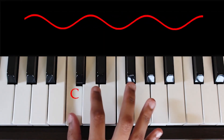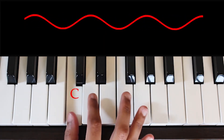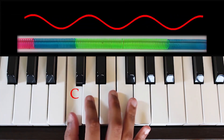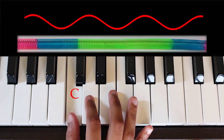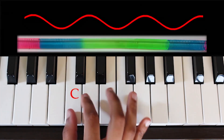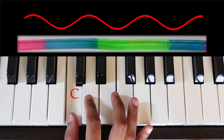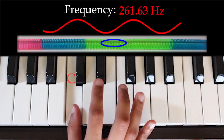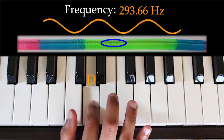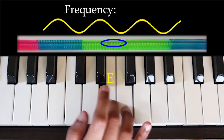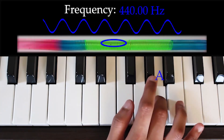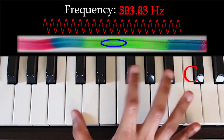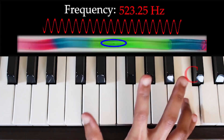Sound waves are longitudinal waves, so they actually look like a slinky. The change in pressure around air particles causes them to vibrate in the same direction as the sound wave is traveling. As you go higher on the scale, the amount of time it takes for one particle to go back and forth decreases, and so the frequency increases.